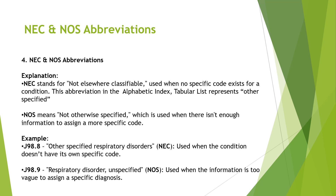As an example, J98.8 is 'other specified respiratory disorder,' which is an example of an NEC condition. J98.9 is 'respiratory disorder, unspecified,' which is an example of a NOS condition — here it is taken as unspecified.